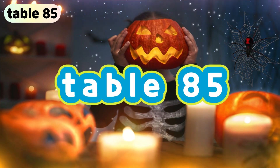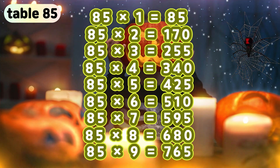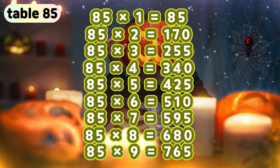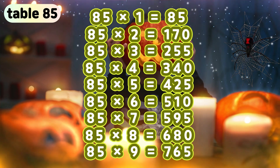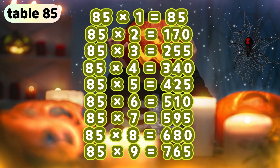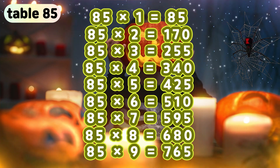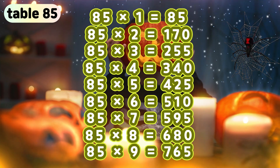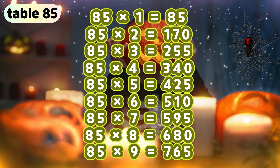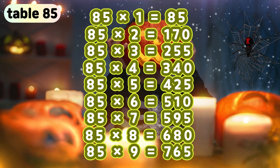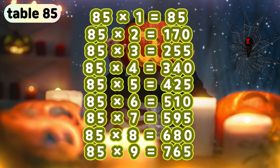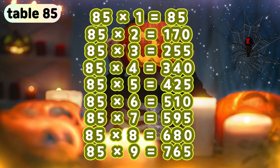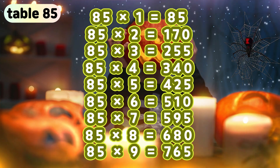Table 85. 85 times 1 is 85. 85 times 2 is 170. 85 times 3 is 255. 85 times 4 is 340. 85 times 5 is 425. 85 times 6 is 510. 85 times 7 is 595. 85 times 8 is 680. 85 times 9 is 765.